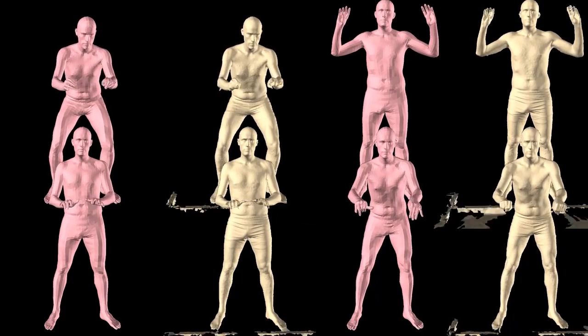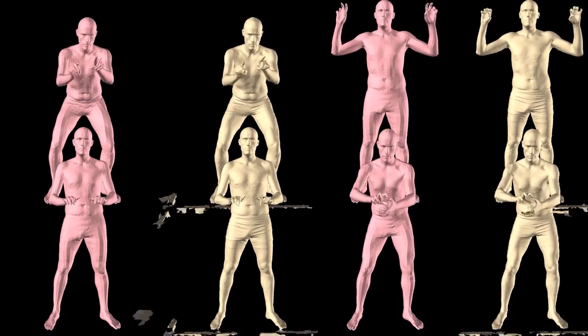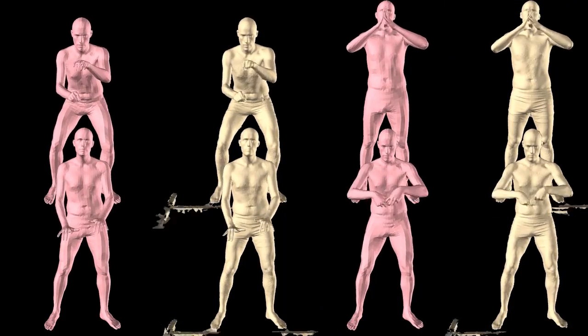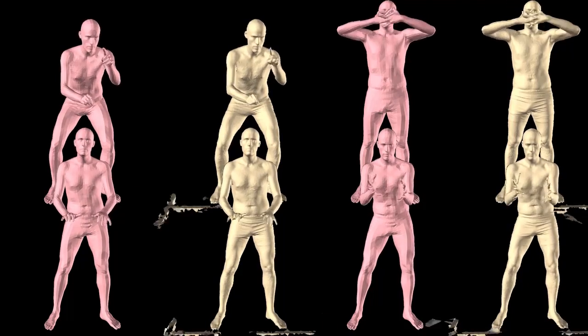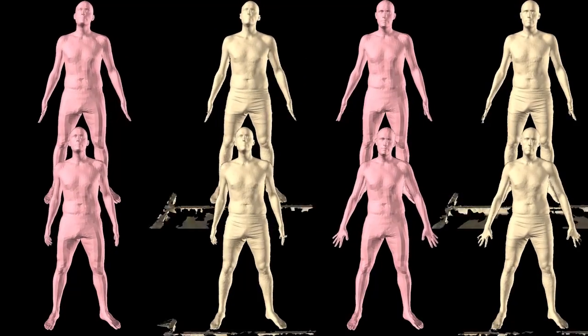When subjects use their hands in a natural manner, the low-dimensional pose space explains their poses well. Complex, unusual poses may fall outside of the low-dimensional pose space. The low-dimensional space can be used as an initialization for optimizing the full articulation of the hands.